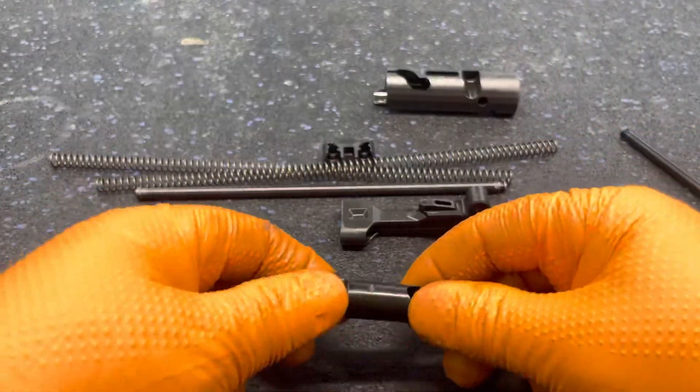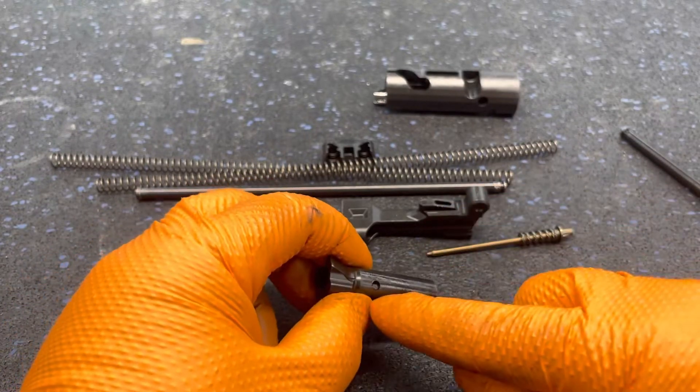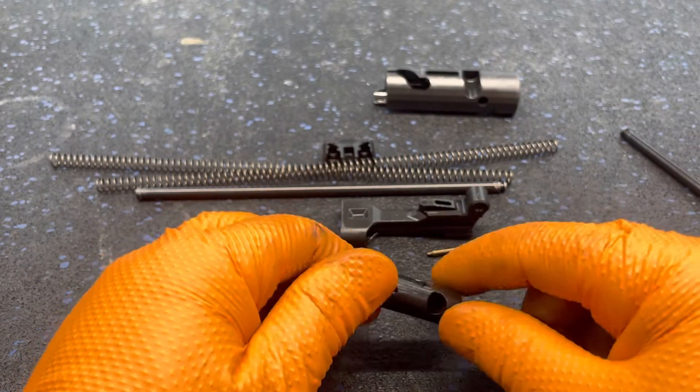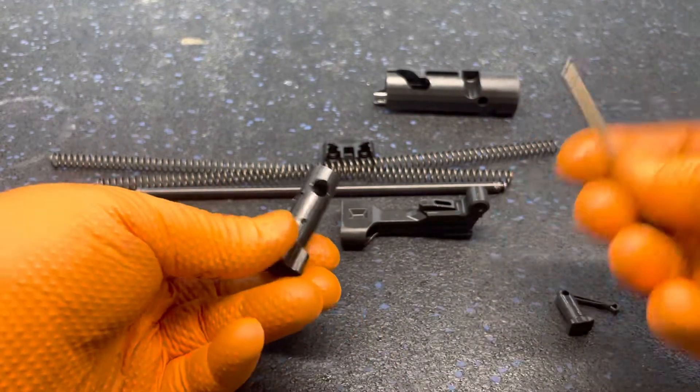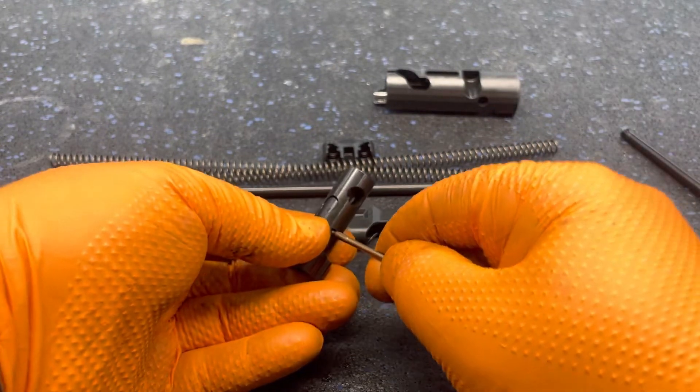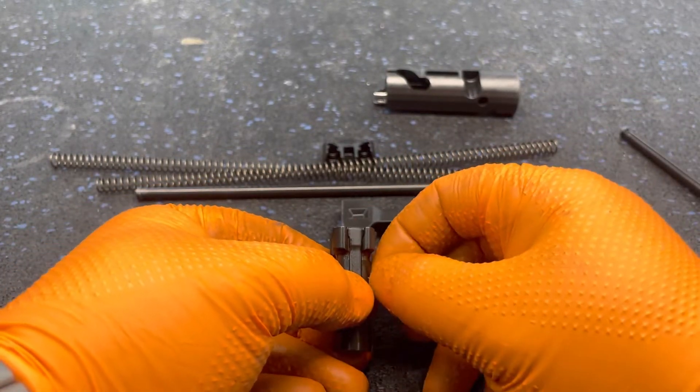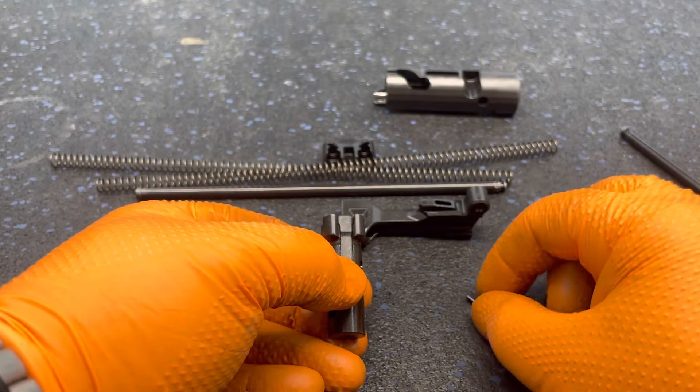To remove the extractor and pin, you'll notice that the extractor pin is larger on one side than the other. I use the firing pin head, push on the pin so that it protrudes, then pull it out with my thumbnail while pushing down on the extractor.